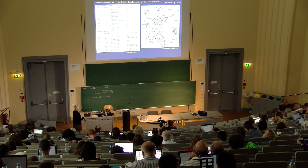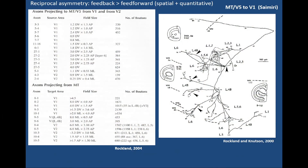One advantage of axon reconstruction is you can get very good quantitative morphological data. The feedforward here to MT has a small number of boutons, and it's only when you go in the reverse direction — feedback — that you more consistently get 1,000 to 2,000 boutons. So very different. Area A projects to area B and back, but in very different spatial and quantitative parameters.